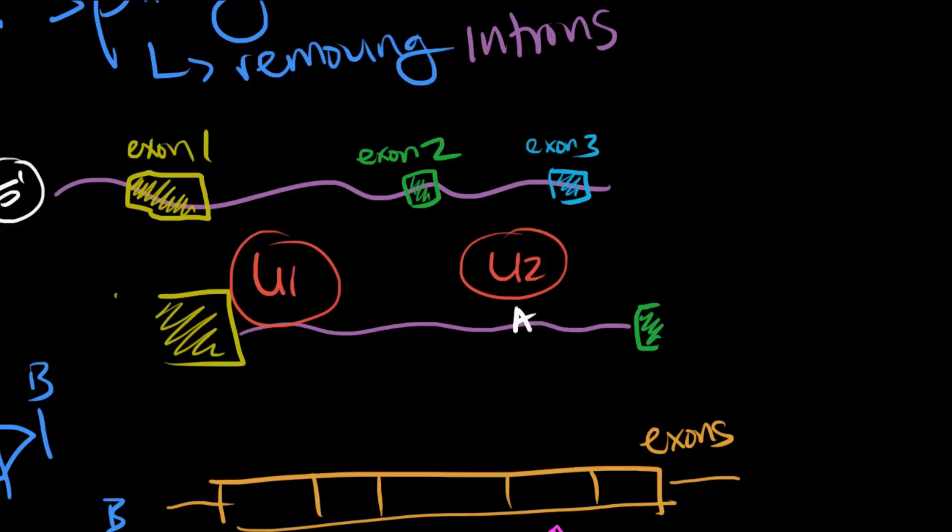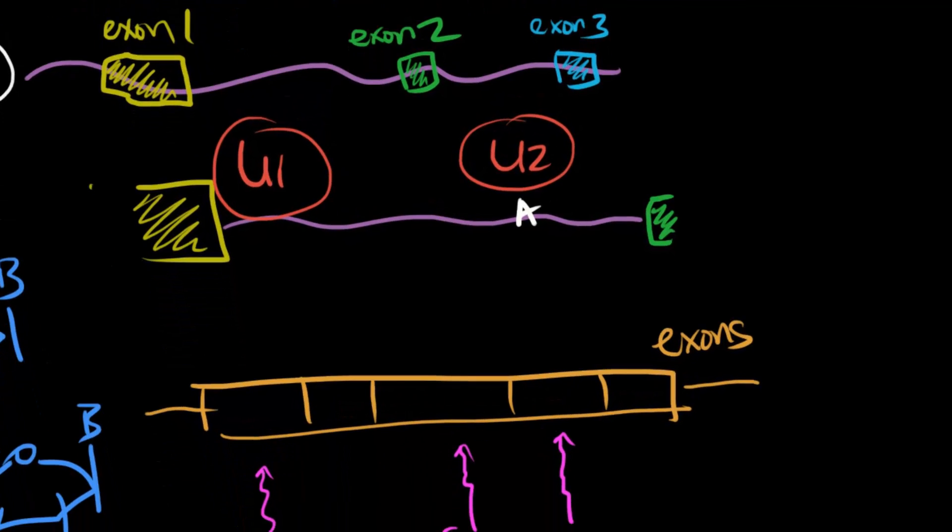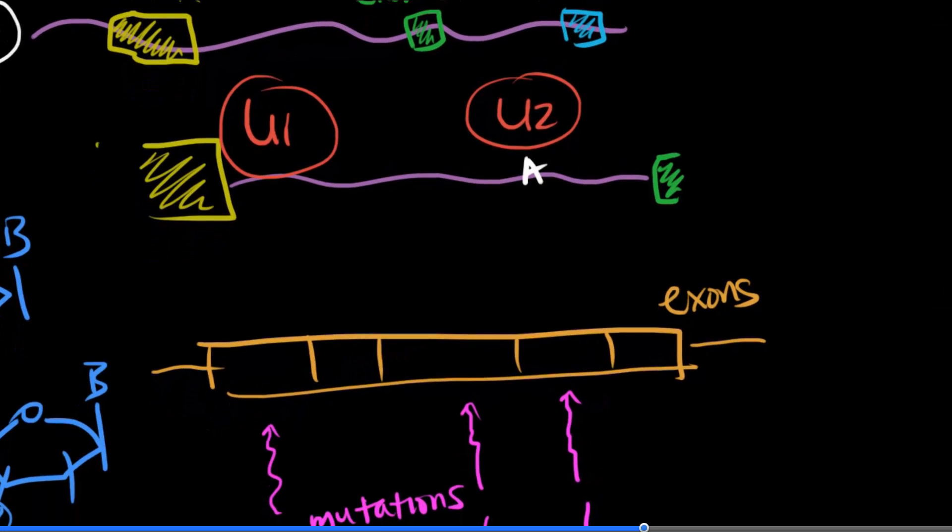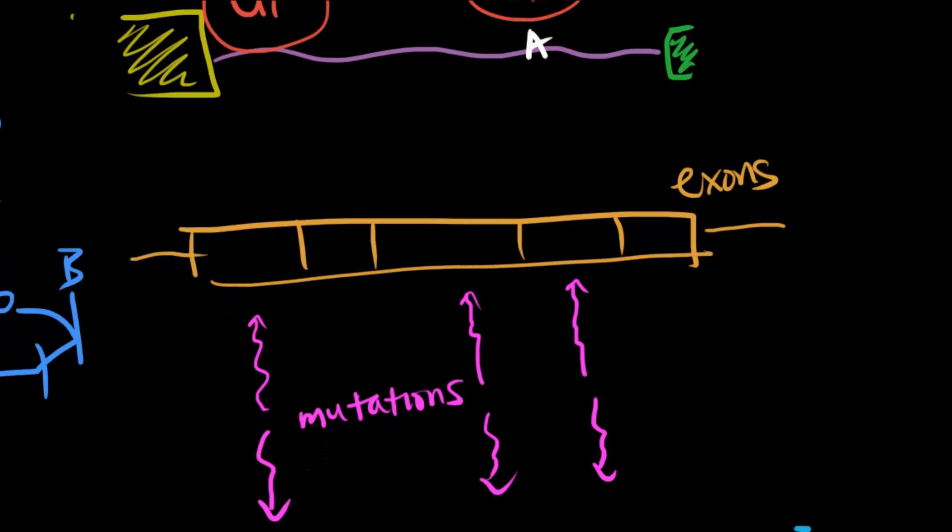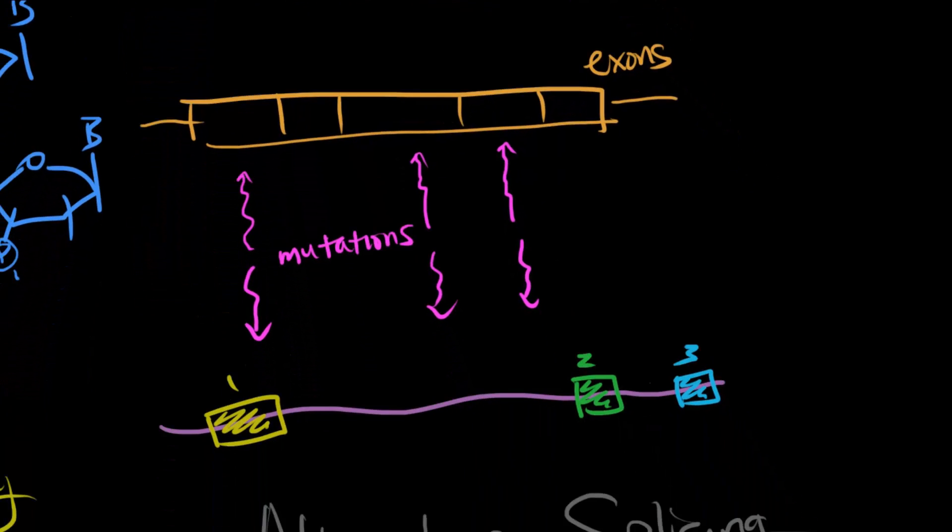When talking about splicing, it's important to talk about why we even have introns, which for the most part don't code for any proteins. Well, if the DNA didn't have introns, it'd look like this. Now, at random, I'm going to draw three mutations, because mutations are pretty random. With no introns, all three mutations would hit an exon, which, since it codes for a protein, could cause a significant change in the protein. Now, with introns, and since introns are so much longer than exons, if I was to randomly draw three places of mutations, maybe it'd look like this. So introns add kind of like a buffer zone for mutations, where if they happened, it'd less likely fall in an exon. Plus, if we're going to be cutting them out anyway, might as well make them really long, to decrease the chance even further.